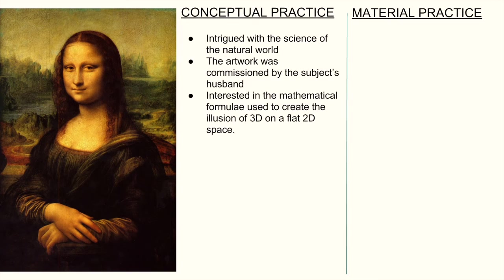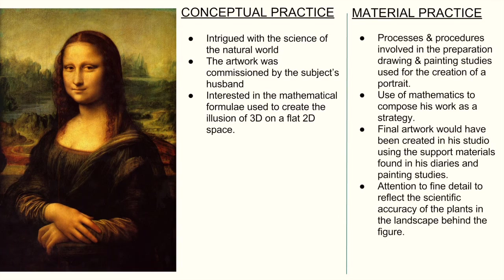In terms of material practice, we look at how the artist used materials. We would need to understand the processes and procedures involved in the preparation drawings and painting studies used for the creation of the final portrait. We would need to think about the strategies and ideas he went through in composing this work using his understanding of mathematics. He also created the final artwork in a studio, using support material found in his diaries and painting studies done when he visited his subject. Lastly, the attention to fine detail to reflect the scientific accuracy of the plants and the landscape behind the figure — these are all parts of his material practice.